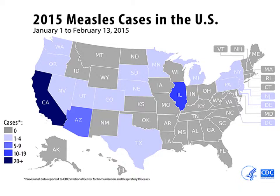Why does measles still occur? One reason is parents not vaccinating their children. Another is the immigrant population — they may provide vaccination records but may not have received a second dose, or the cold chain for the vaccine may have been broken during delivery. Simply having had the vaccine may not be enough if it wasn't stored properly.